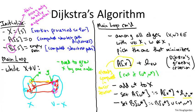Dijkstra's algorithm is driven by a single while loop. We add one additional vertex to an evolving set X as the algorithm proceeds — X is the vertices that have been processed so far. We maintain the invariant that for every processed vertex we've computed the shortest path distance to that vertex. Initially X is just the source vertex S, with shortest path distance zero. The cleverness is in how we figure out which vertex to add to X each iteration.